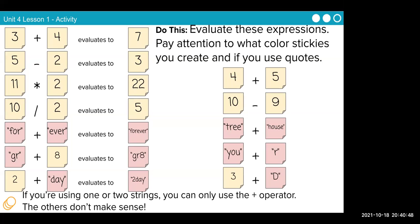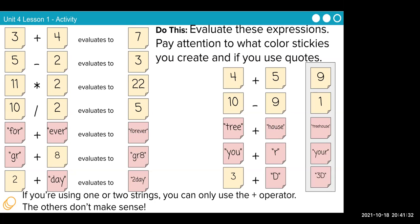Evaluate these expressions. Pay attention to what color stickies you create and if you use quotes. Four plus five is nine. Ten minus nine evaluates to one. 'Tree' plus 'house' goes to 'treehouse' in double quotation marks. U plus R, 'your', correct? Three plus D, a number and a string, turns into a string. '3D' in quotation marks.